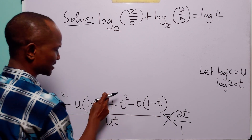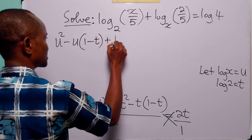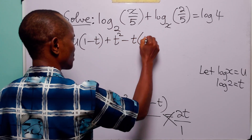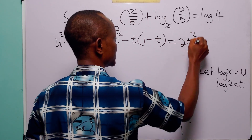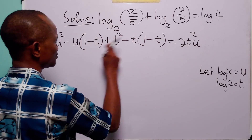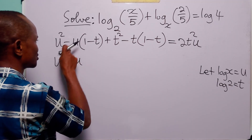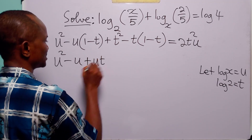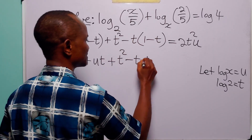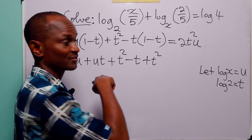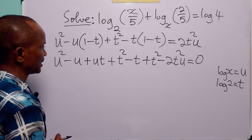Cross multiplying to clear the fraction, the numerator u² minus u(1 minus t) plus t² minus t(1 minus t) equals 2t · ut, that is 2t²u. Opening the brackets: u² minus u plus ut plus t² minus t plus t². Bringing 2t²u to the left-hand side gives the equation equal to zero.